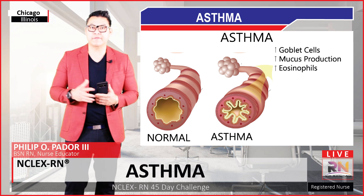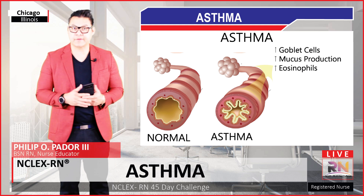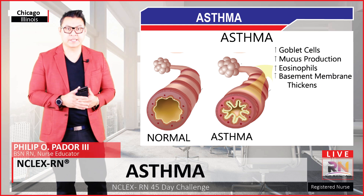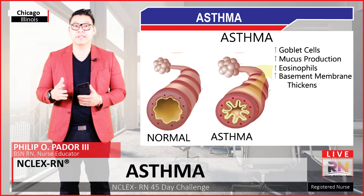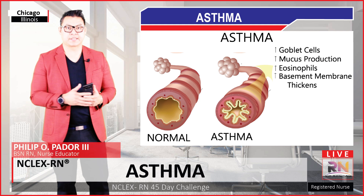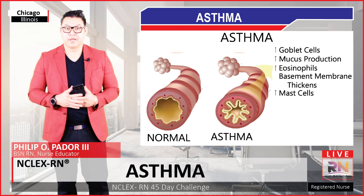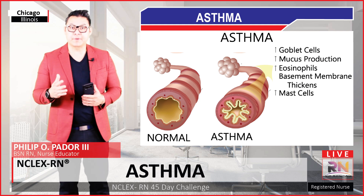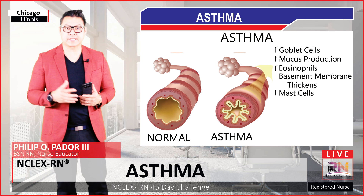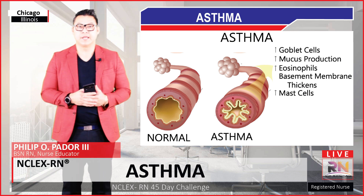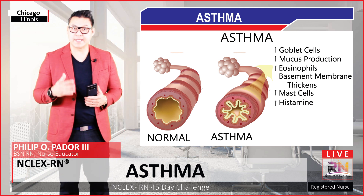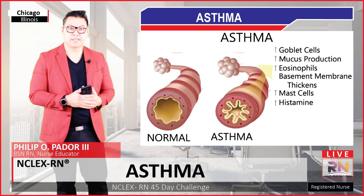Here we have the pseudostratified columnar epithelial cells, and below them the basement membrane thickens. Within the lamina propria, we see an increase in mast cell number, and so we get an increase in histamine release.